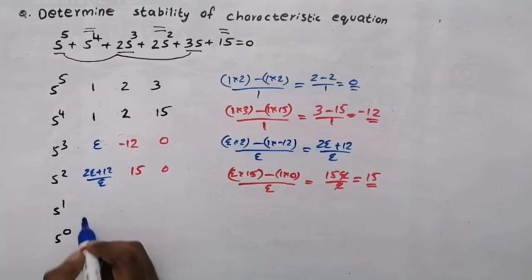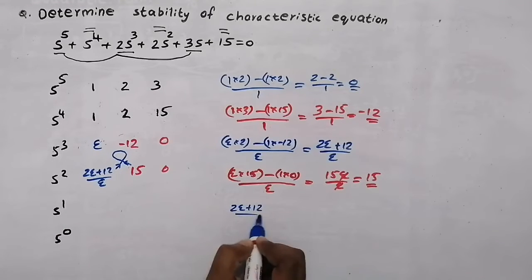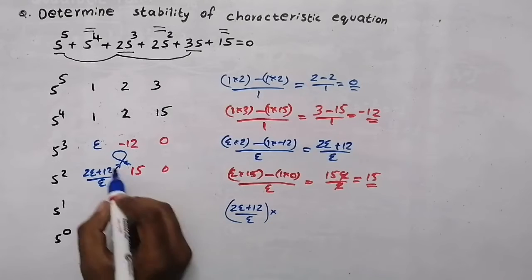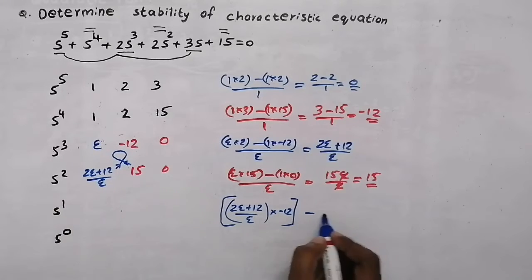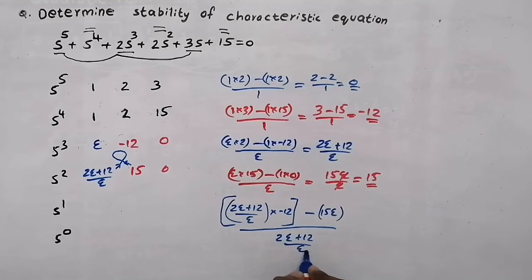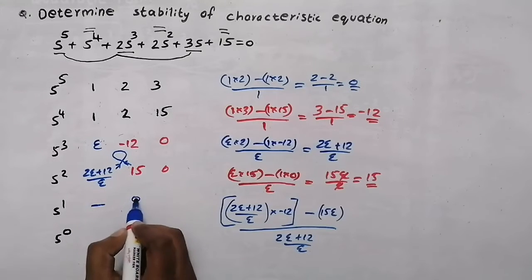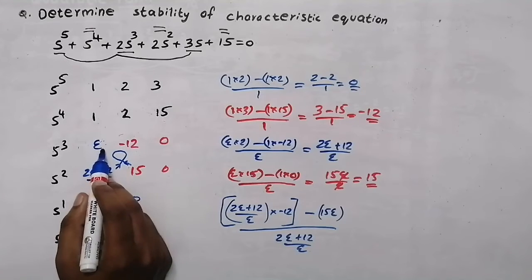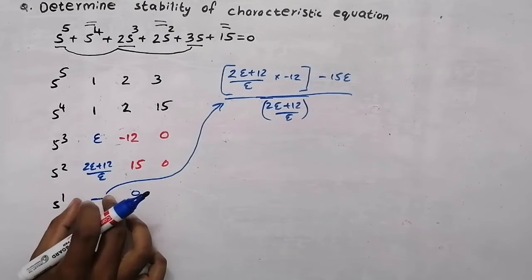Now, in order to get this element, we will do the multiplication in this direction. The starting element is (2 epsilon + 12) / epsilon, and we do the multiplication: (2 epsilon + 12)/epsilon into minus 12, minus epsilon into 15, all divided by the starting element (2 epsilon + 12)/epsilon. Then the next value will be 0, because the relevant terms multiply to 0.